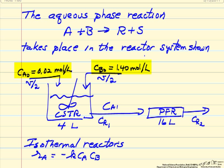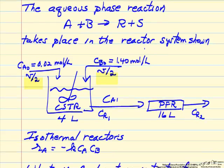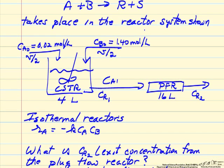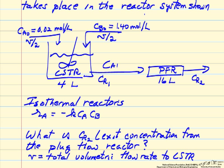The concentration of A is low, and the concentration of B is relatively high. Each has a volumetric flow rate V over 2, so that the total volumetric flow rate to the system is V. Isothermal, second order reaction, and the question is what is the concentration Cr2, the product at the exit of the system.